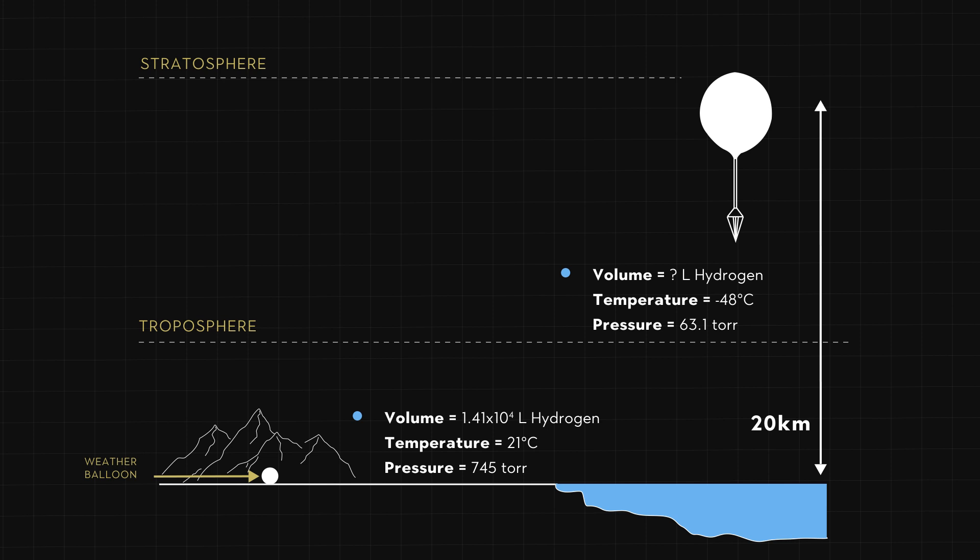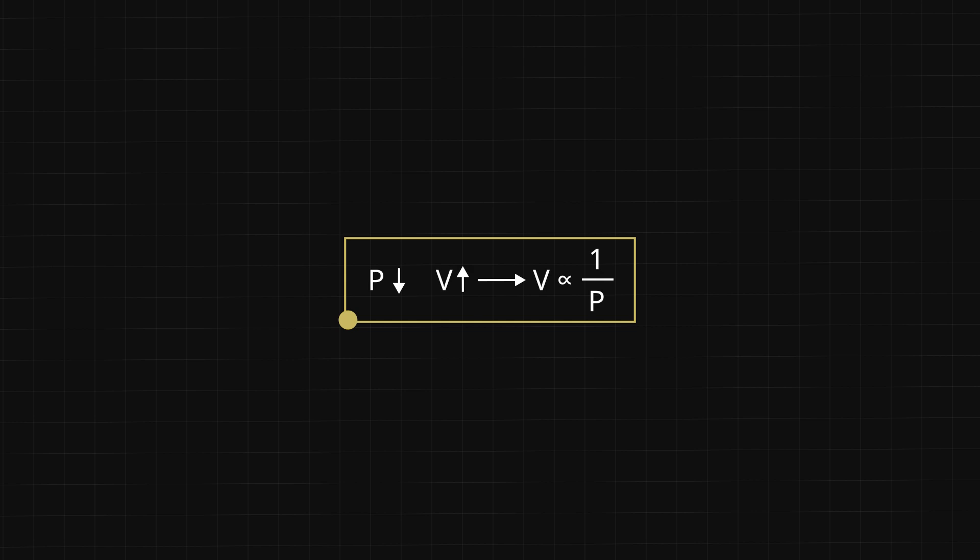Our job is to work out what the volume will be when we get there, which is very important for designing a balloon that won't pop at altitude. First, let's think about the pressure change — this is like what happens inside our ears on a flight. While on the ground, the gas in our ears is at the same pressure as the atmosphere, but as the plane races upward, the pressure in the air around us drops and the gas in our ears tries to expand to a larger volume. We feel this as a stretching sensation in our ears. As pressure decreases, the volume of the gas increases.